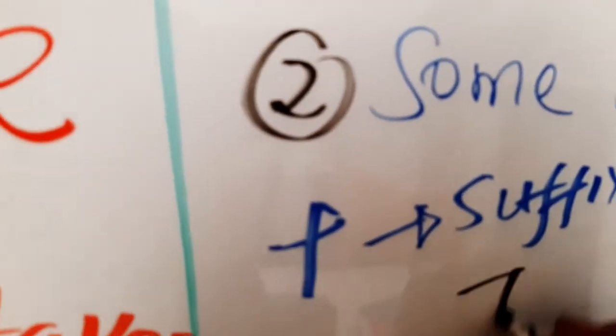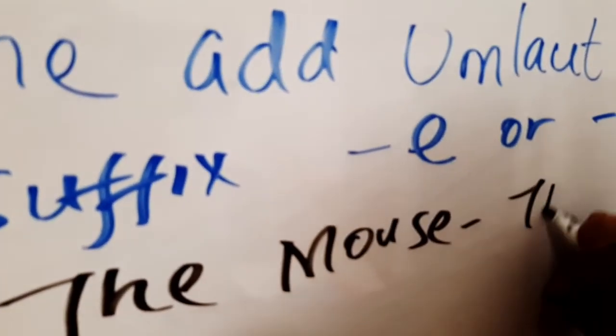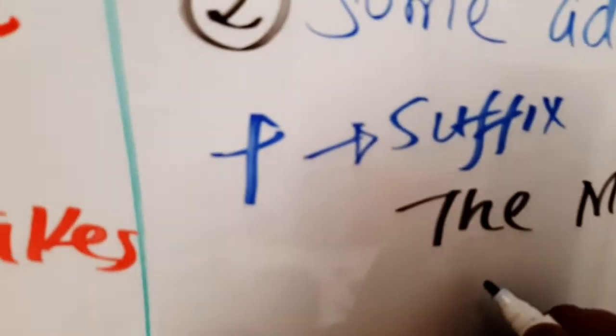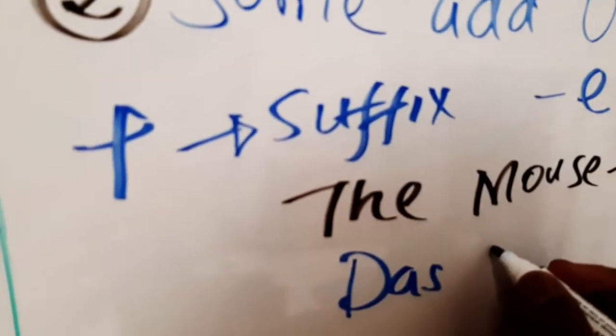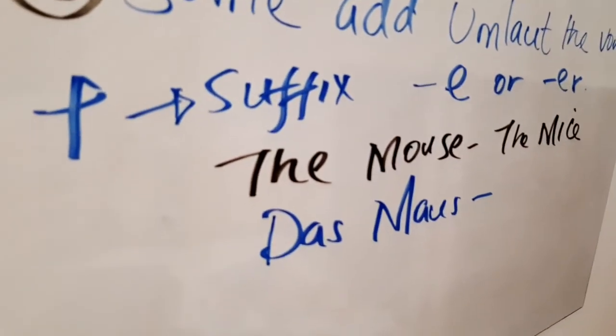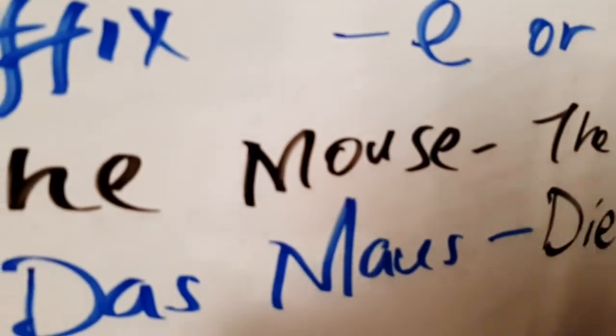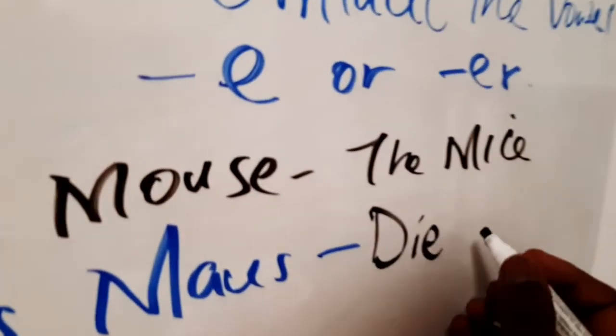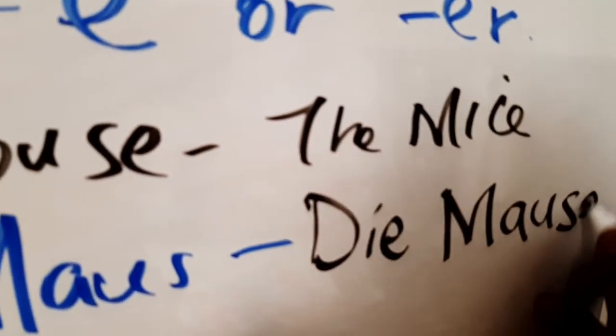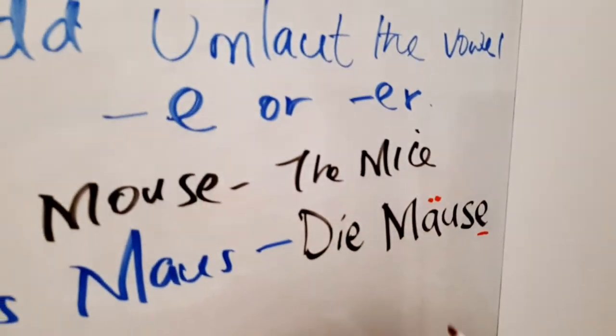For example, if you say the mouse, in plural is the mice. And this one is das Maus, and in plural it will be die, this is a bit tricky to pronounce, it's Mäuse. So you see we have added -e, and here you have to put the umlaut, so it will be Mäuse.